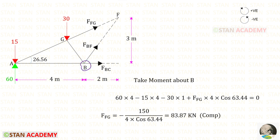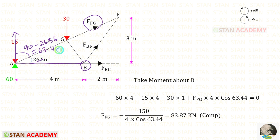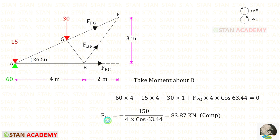About point B, FFG is not perpendicular. We resolve FFG with respect to AB by keeping it vertical. To keep it vertical, we need this angle, which is 90 minus 26.56, giving 63.44 degrees. About point B, FFG is acting in the clockwise direction, so it is positive, with distance 4, and we multiply by cos 63.44. Solving for FFG gives a negative value — meaning it is compressive.